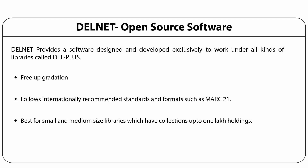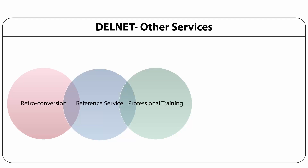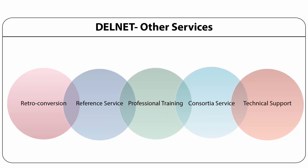DELNET provides a DEL plus software which has features like MARC 21 compatibility, barcode application, and is compatible for all libraries with free upgradation from time to time. The software follows internationally recommended standards and formats such as MARC 21, and is best for small and medium size libraries with collections up to one lakh holdings. DELNET provides major services to member libraries including retro conversion, reference services, professional training, consortia services, and any type of technical support required. DELNET also occasionally organizes training programs on implementing Koha, DSpace, and other software.